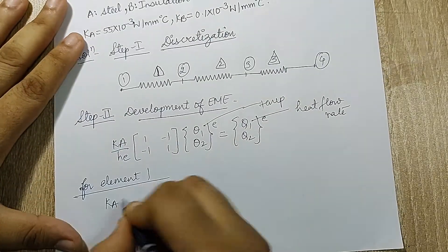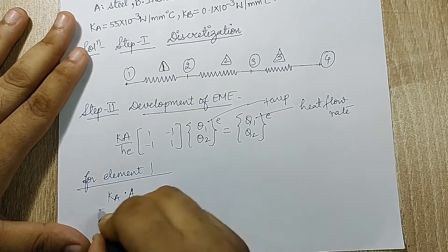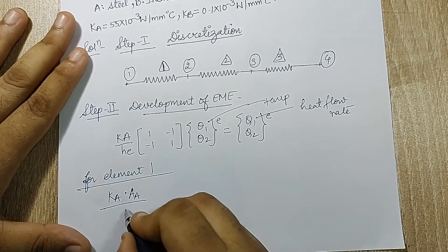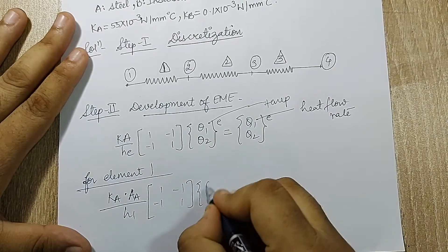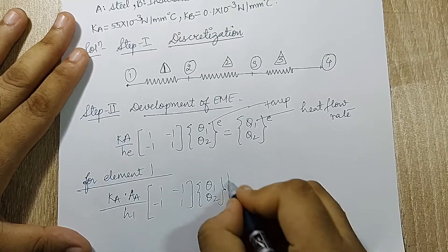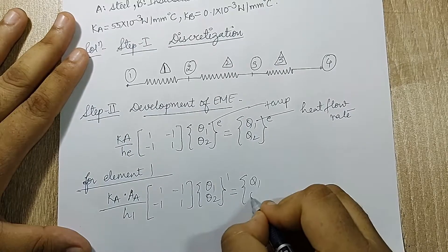So I'll start for element 1. k*A_e upon h_e, so [1, -1; -1, 1] times {theta_1, theta_2} raise to 1 is equal to {q_1, q_2} raise to 1.